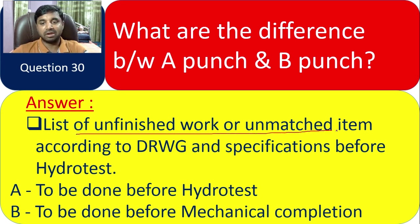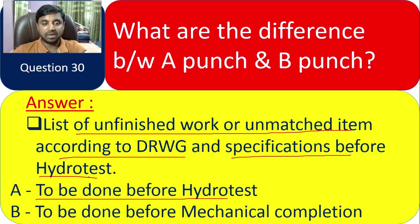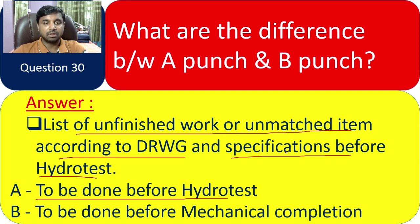Question 30: What is the difference between A punch and B punch? A punch is a list of unfinished or unmatched items according to drawing and specification that must be completed before hydro test. B punch items can be closed after hydro test, before mechanical completion. So if during review of the hydro test package there is an A punch item, it must be closed prior to hydro test; B punch items can be closed after.